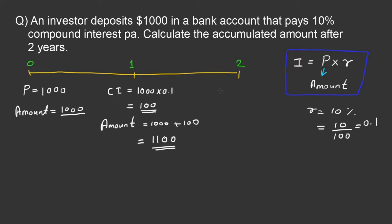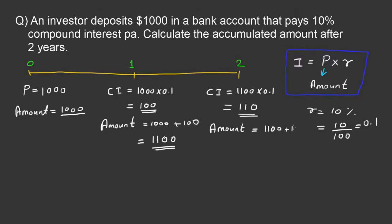Now going to period 2: the compound interest equals 1100 × 0.1. I take 1100 here because in compound interest, the principal for the second period is the amount at the end of period 1, which is 1100. So 1100 × 0.1 = 110. The amount at the end of period 2 is 1100 + 110 = 1210.